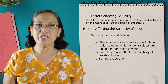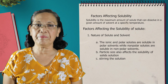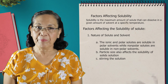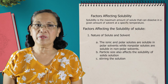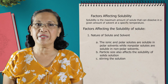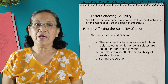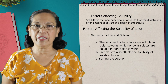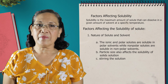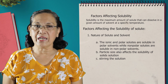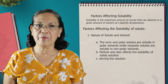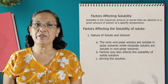For example, sodium chloride is an ionic compound. Sugar, or sucrose, is a polar compound. These two — sugar and salt — are soluble in the polar solvent such as water. An example of a non-polar solute dissolved in a non-polar solvent is fat. Fat is a non-polar substance and is soluble in carbon tetrachloride, which is also a non-polar solvent.